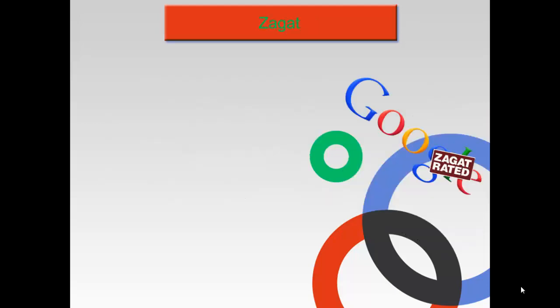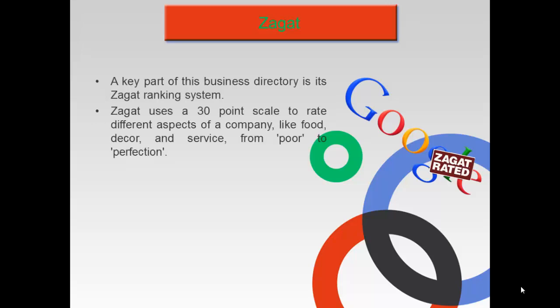A key part of this business directory is its Zagat ranking system. Zagat uses a 30-point scale to rate different aspects of a company like food, decor, and service, from poor to perfection.